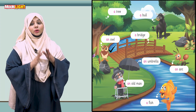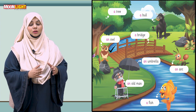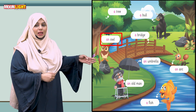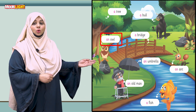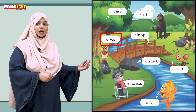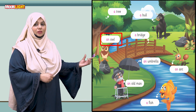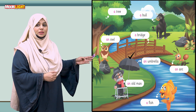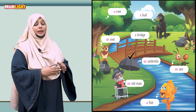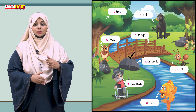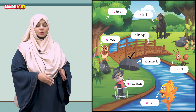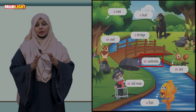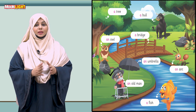Here you can see a picture of an owl — the first sound is 'o', which is a vowel sound, so we write 'an owl'. Here is a picture of an umbrella — 'u' sounds like a vowel, so this is a vowel sound and we write 'an umbrella'.